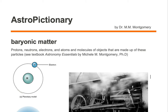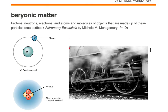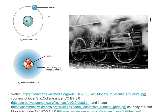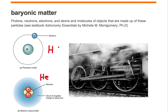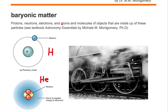Baryonic matter is protons, neutrons, electrons, and atoms and molecules of objects that are made up of these particles. For example, let's take a look at a hydrogen atom and a helium atom. Both of these are examples of baryonic matter — they are the atomic representation of baryonic matter.